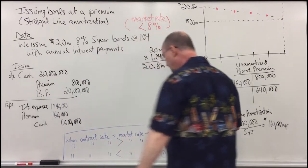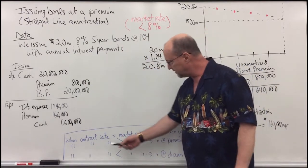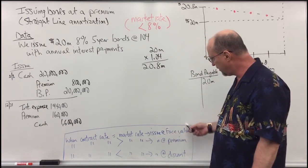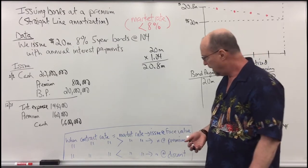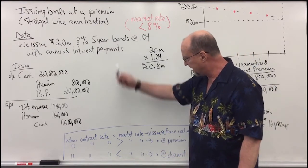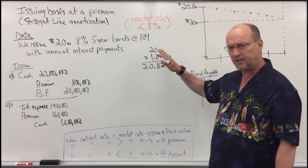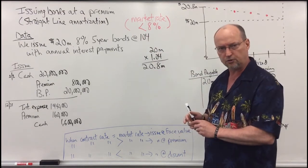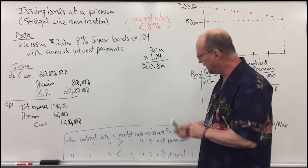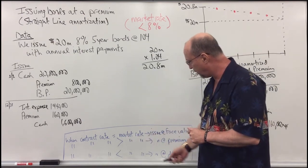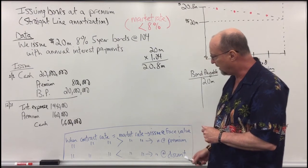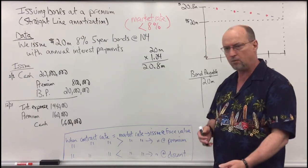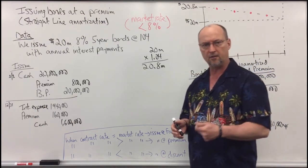Notice: when we issue bonds with a contract rate that is the same as the market rate — which is rare — there's no discount or premium and we issue at face value, $20 million. If the contract rate, as in this case, is greater than the market rate, we issue the bonds at a premium. If the contract rate were less than the market rate, we would issue the bonds at a discount. You can view the same process with a discount in another video. That's how we issue bonds and amortize them using the straight-line method.